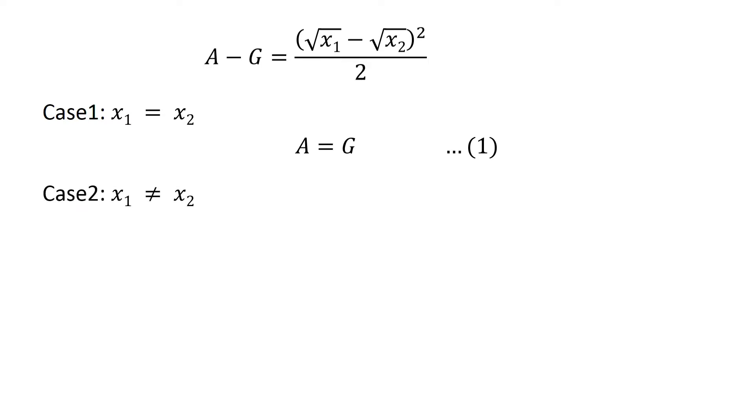Case 2, x1 is not equal to x2. In this case, square of square root of x1 minus square root of x2, upon 2, is always greater than 0. Therefore, A minus G is greater than 0, or A is greater than G. Let's mark this equation as 2.